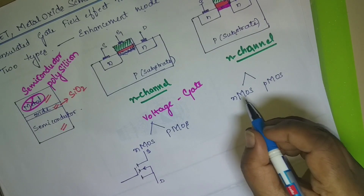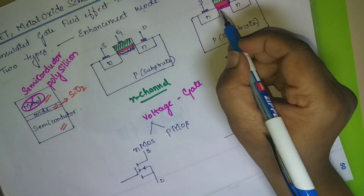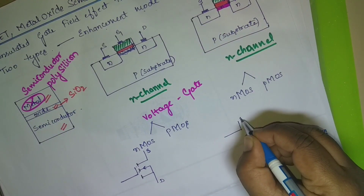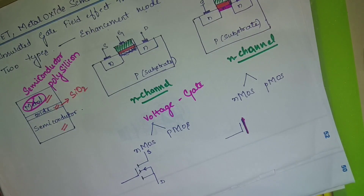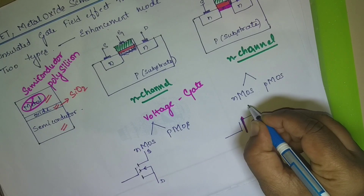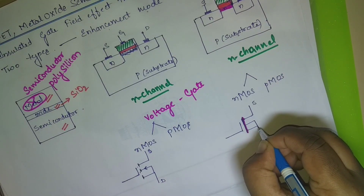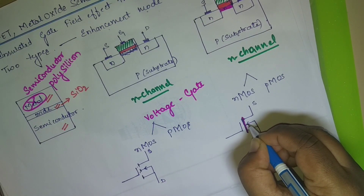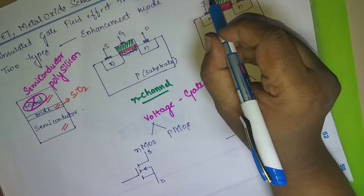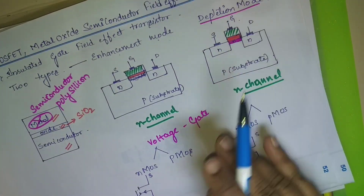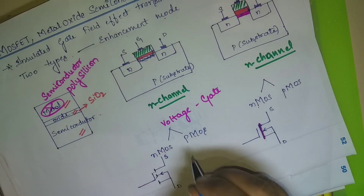For the NMOS depletion mode transistor, you have the gate, and to show the channel connection you write a joined line or use a thick line — both are accepted. You have source, drain, and a substrate terminal. The direction of the arrow remains the same since this is NMOS. The joined or thick line indicates it is depletion mode, whereas separated source and drain lines indicate enhancement mode.